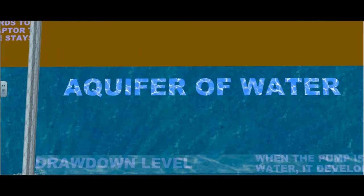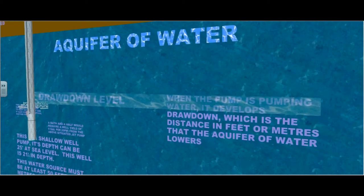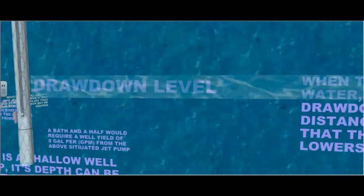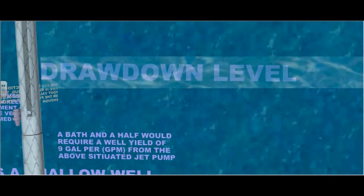This is an aquifer of water. When the pump is pumping water, it develops drawdown, which is the distance in feet or meters that the aquifer of water lowers. It actually develops a cone which goes down to the drawdown level, which must be above the foot valve.